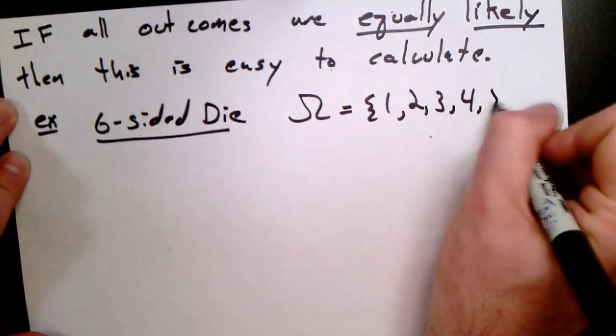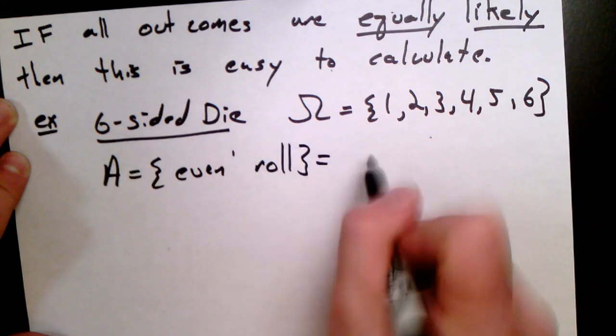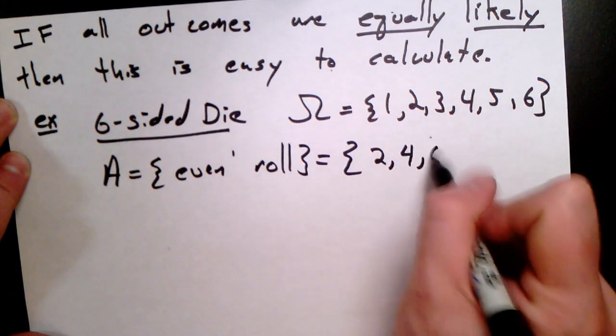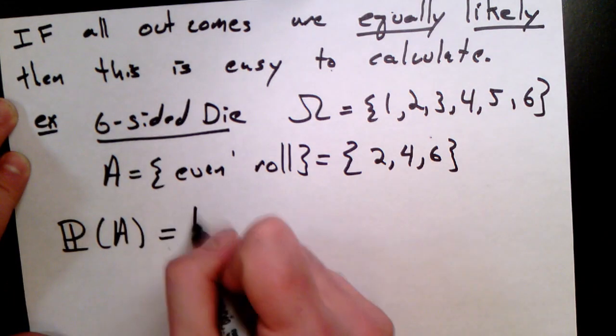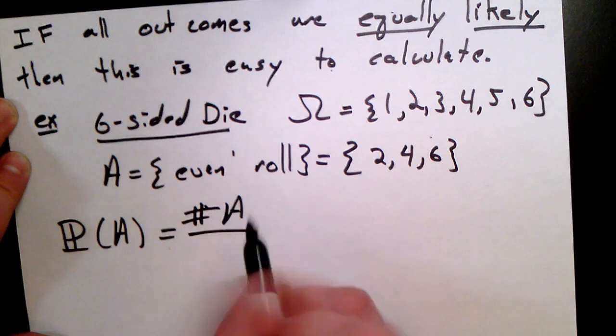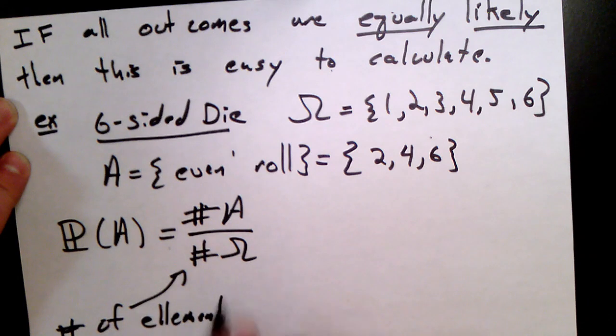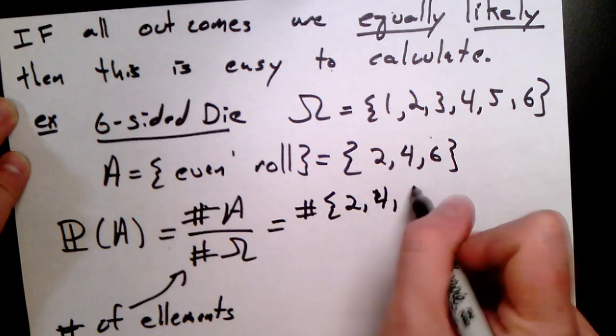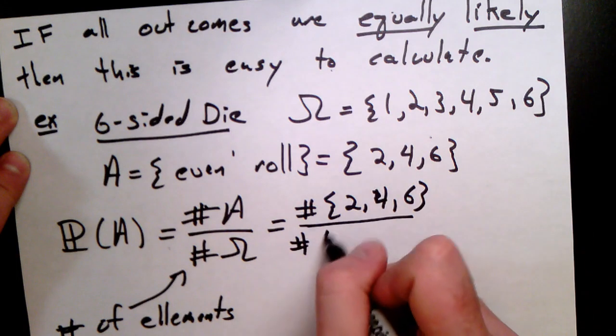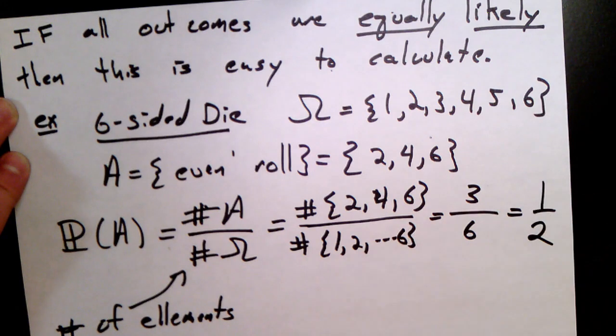Or, if our event is again the chance of rolling an even number, what's the chance of rolling an even number? Well, it should be one-half because there are three even numbers and six total rolls. So, in general, this is a general principle that if all outcomes are equally likely, the probability of an event is simply the number of elements in the event over the total number of elements in the outcome space. So, in this case, there are three elements in the event roll an even number, and there are a total of six elements in the outcome space. So, that's three over six, or one-half.